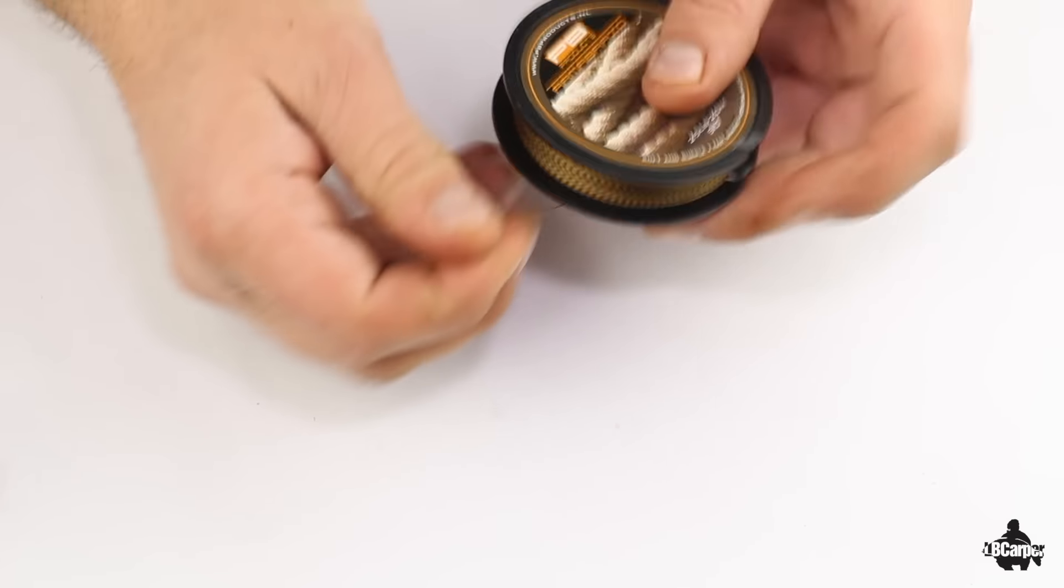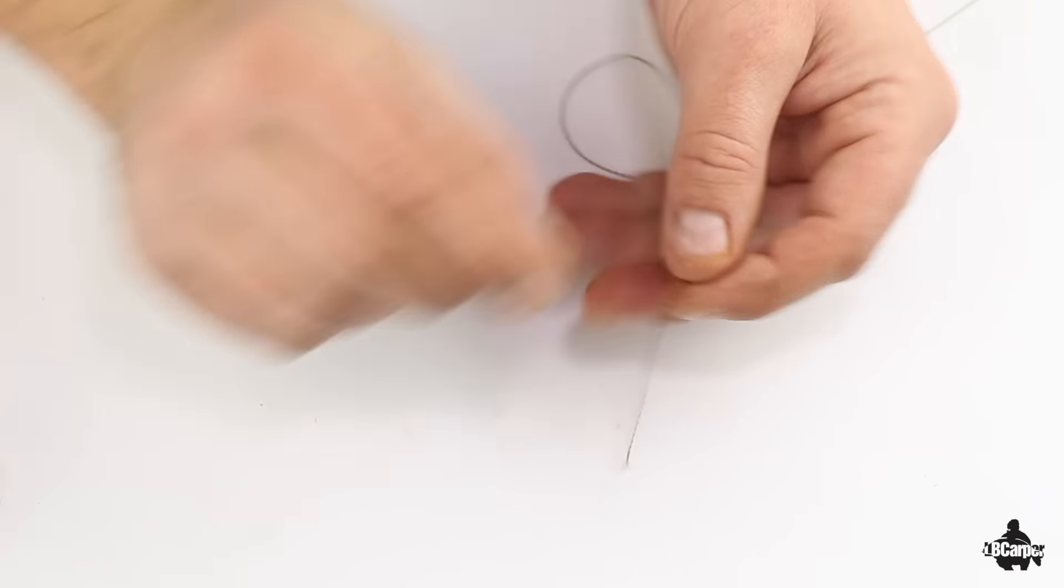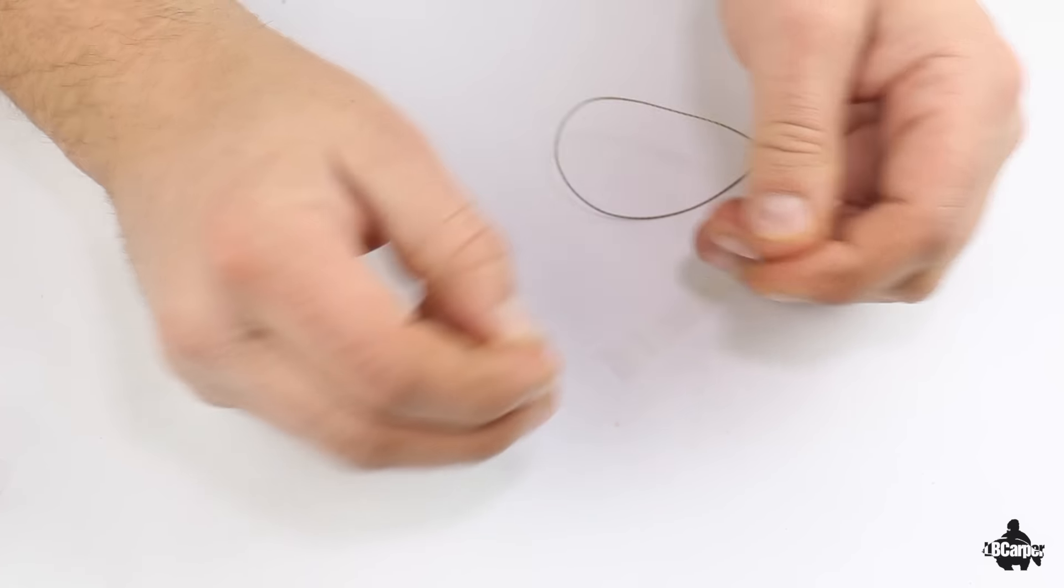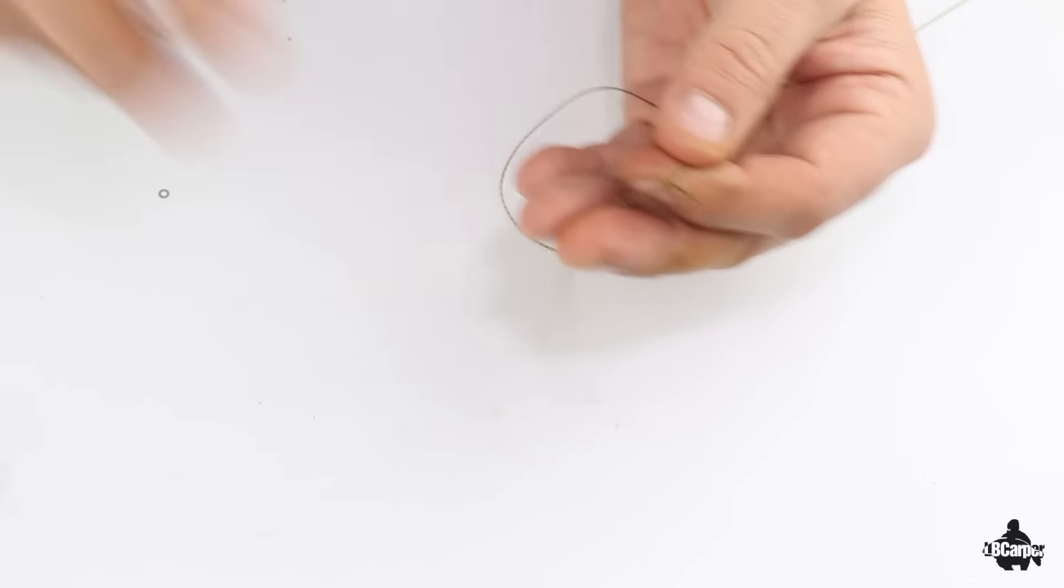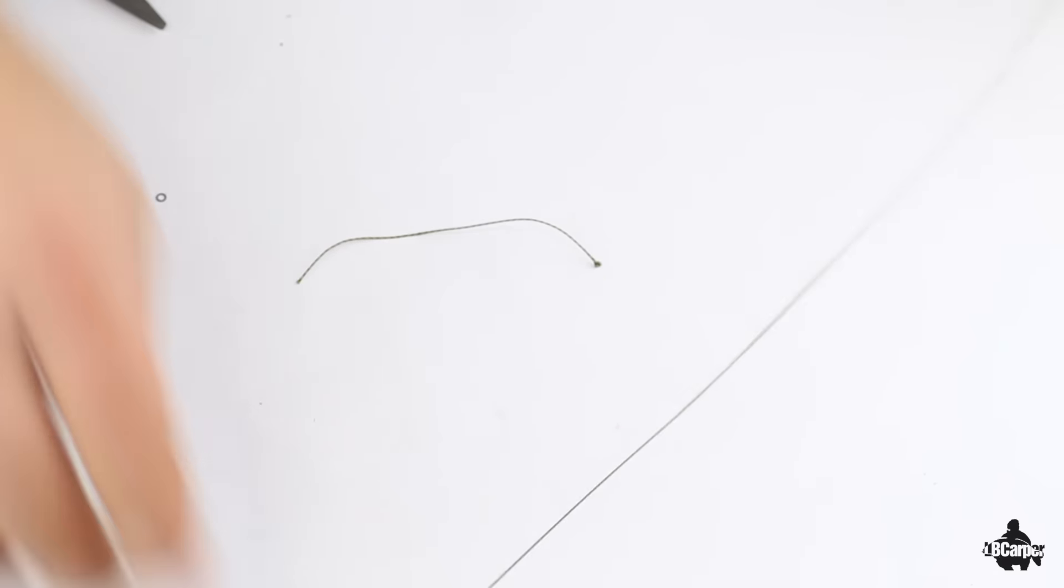First of all you need a length of braid, nice soft fast sinking super braid. Tie a loop in the end, there you go, simple overhand knot, simple loop. Trim it down about 12 to 18 inches.